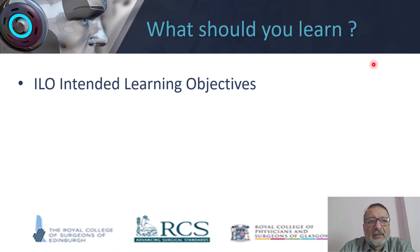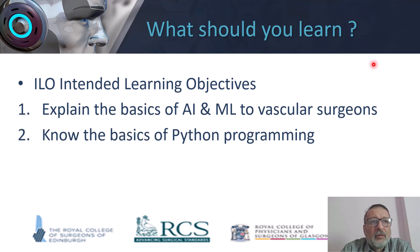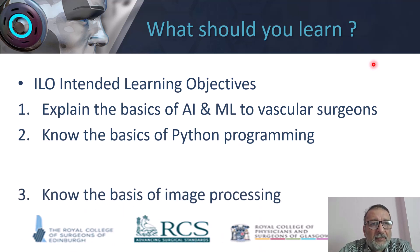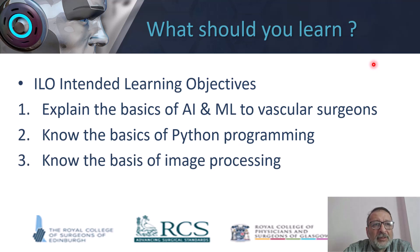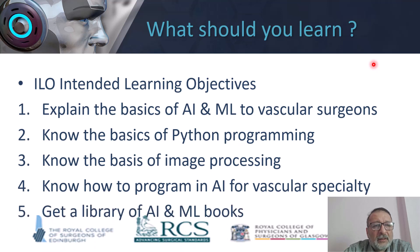The intended learning objectives are: explain the basics of AI and machine learning, which does not need prior computer knowledge — and this is very important. You will know the basics of a very easy computer language called Python, which is very near simple English. And to know a little bit about image processing by AI and machine learning. Hopefully by the end of the course, you can develop your own program. It is for vascular surgeons and doctors overall, and I will provide a small digital library of AI and machine learning books.